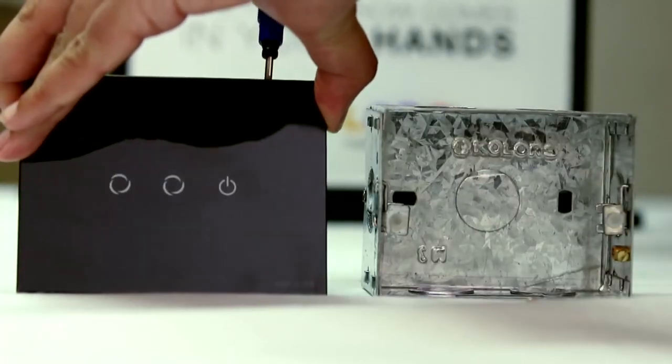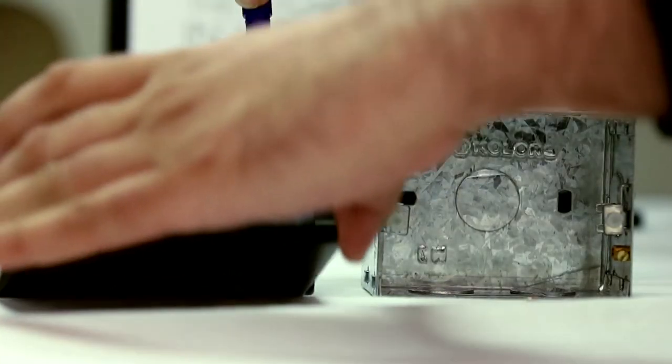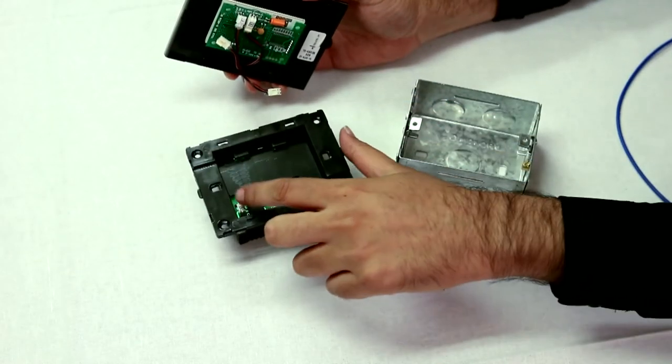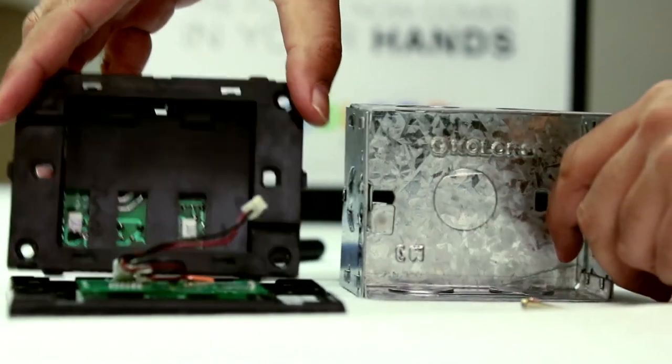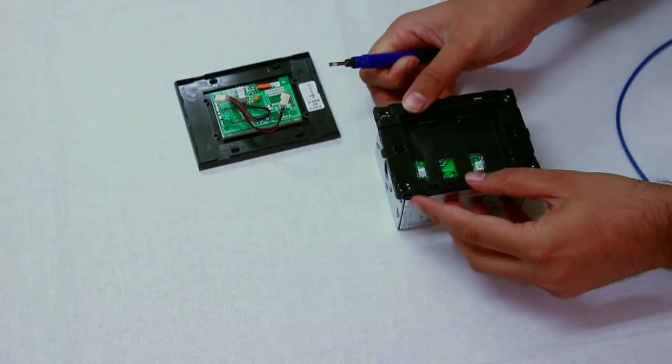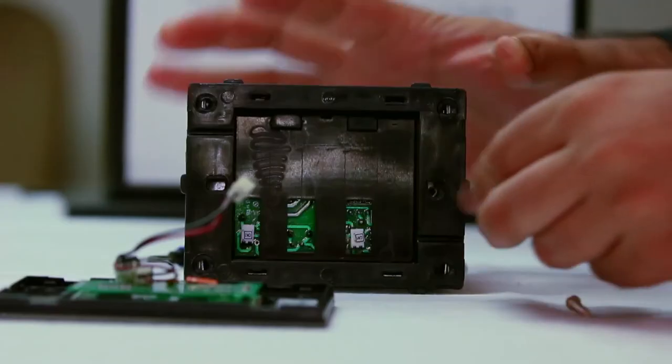Remove the front plate from the back module as shown. Do the wiring as per the circuit diagram and fix the back module in concealed or surface box of appropriate module with help of the screws provided.